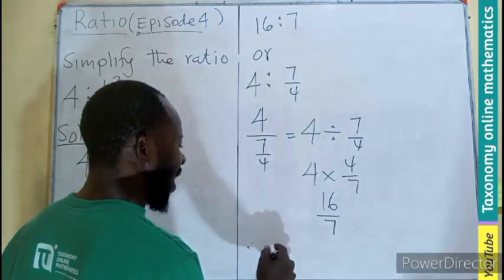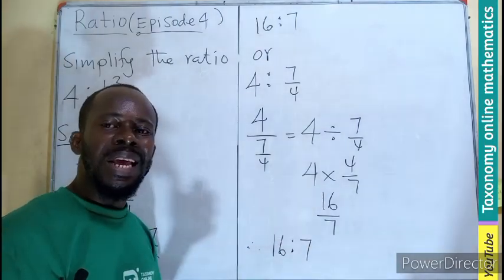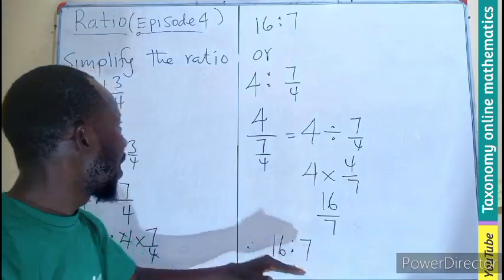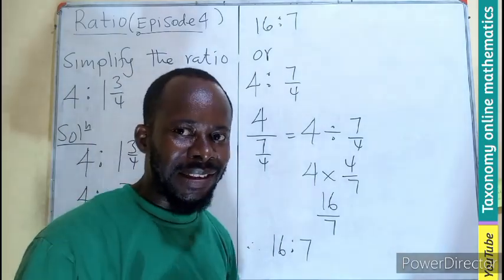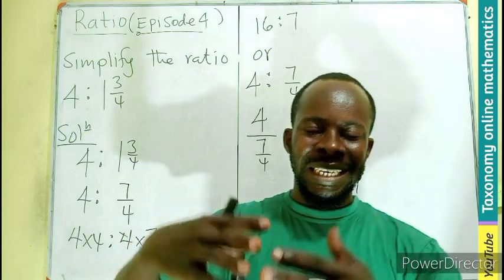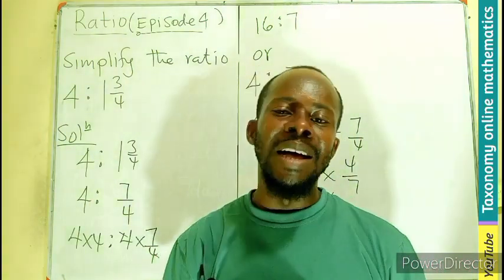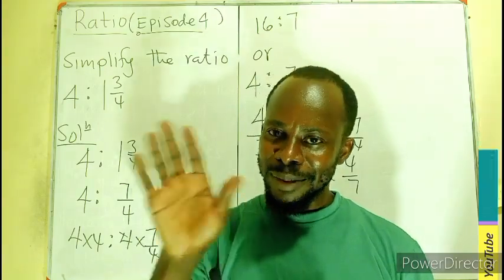Since a ratio can be in a fraction and a fraction can also be in a ratio form, we can say that our ratio will be 16 is to 7. You can follow this approach or the other approach. Let's keep it simple so that when we see them combined in a given question, we can be able to apply them. Thanks for watching, like, share, and comment. Bye bye.